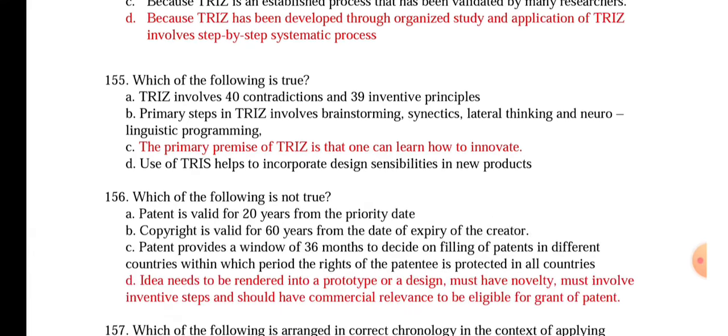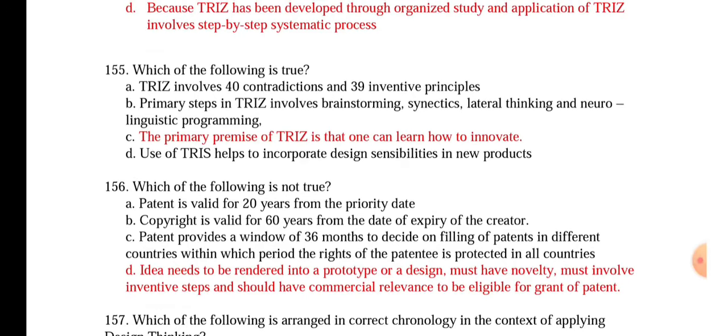Question 155: Which of the following is true? TRIZ involves 40 contradictions and 39 inventive principles — that is not correct. The answer is: the primary premise of TRIZ is that one can learn how to innovate.